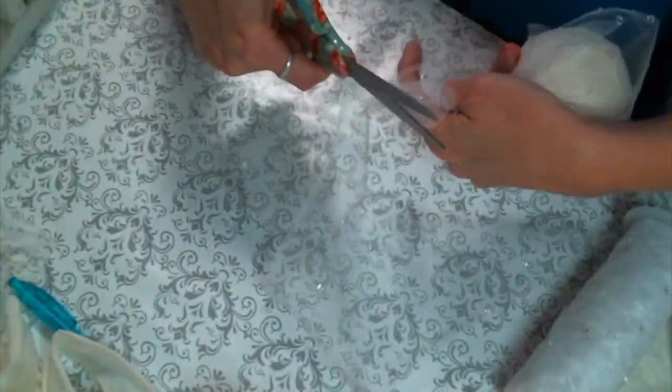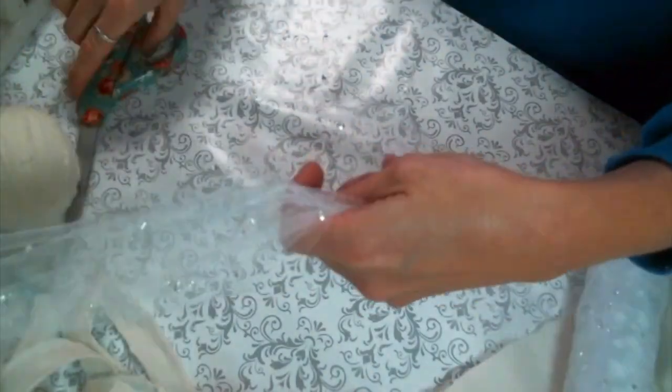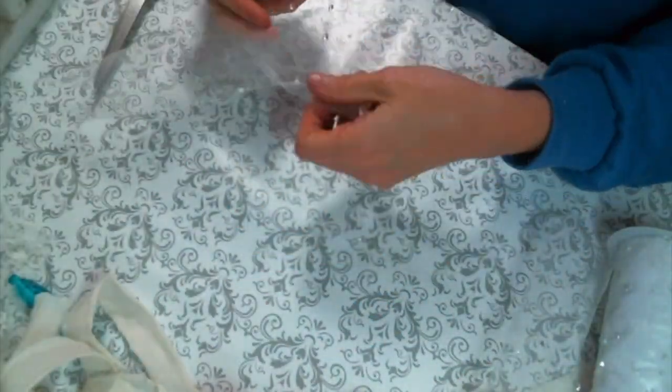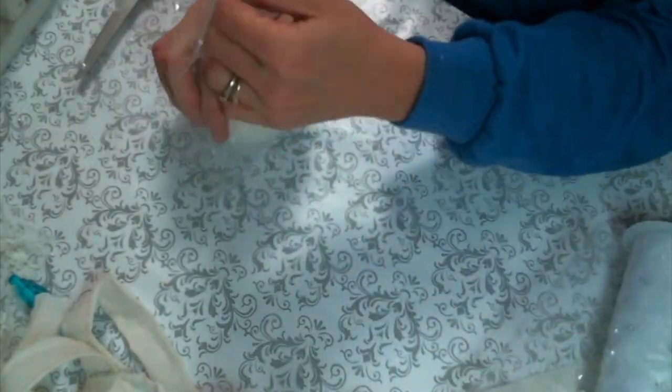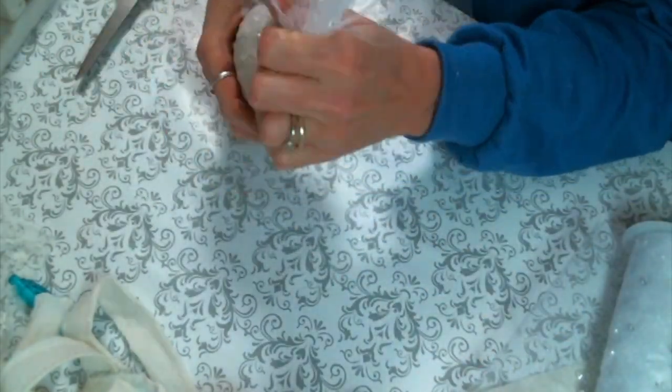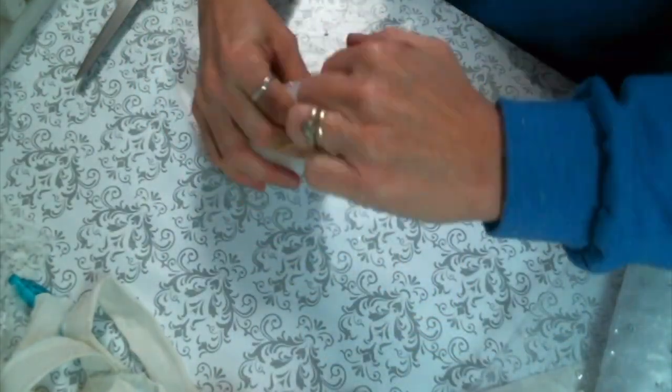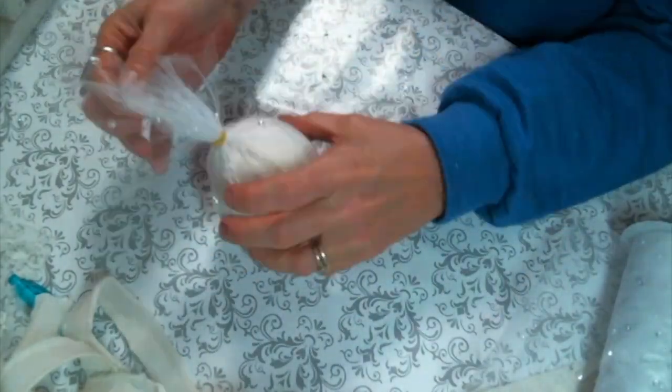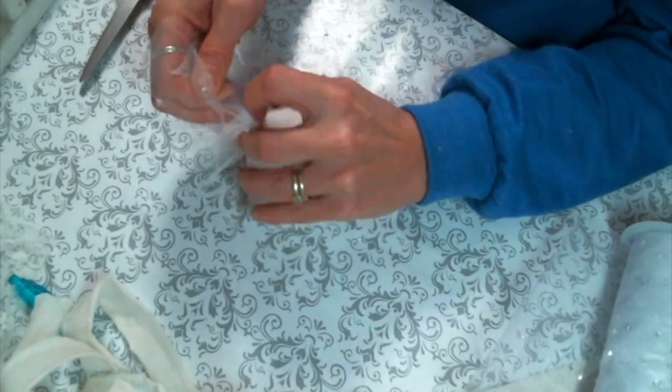For our third ornament I am actually going to use that tulle with the crystals on it that I got from Hobby Lobby. I'm just going to gather up two pieces of that tulle around the fabric covered ball and I'm going to attach that with a rubber band so that I can move things around. Rubber band works great for this.